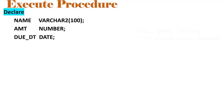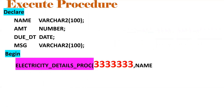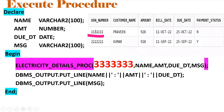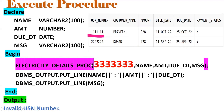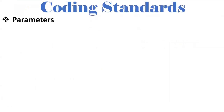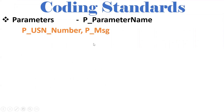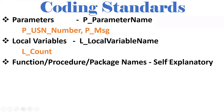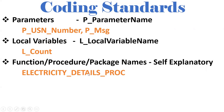One more scenario: if we pass USN all-threes — which doesn't exist in the table — this is an invalid USN number. The count will be 0 and we display 'Invalid USN Number'. This is the negative scenario handled by our common logic. Regarding coding conventions: parameters should be prefixed with P_underscore, e.g., P_USN_number, P_message. Local variables use L_underscore prefix. Procedures should have meaningful names like electricity_details_proc, so we can identify it as a procedure for electricity details.